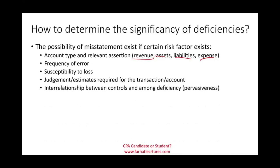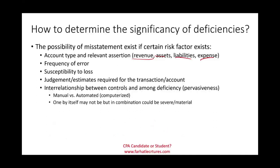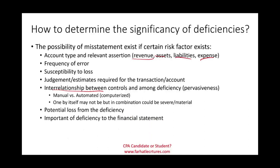We must look at the interrelationship between controls — is a deficiency limited to one department, or does it affect other controls? Manual controls may be limited to one area, but automated controls could affect many areas. We also consider the potential loss amount and the importance of the deficiency to the financial statements — for example, whether it affects our going from net income to net loss, or whether it affects revenue.